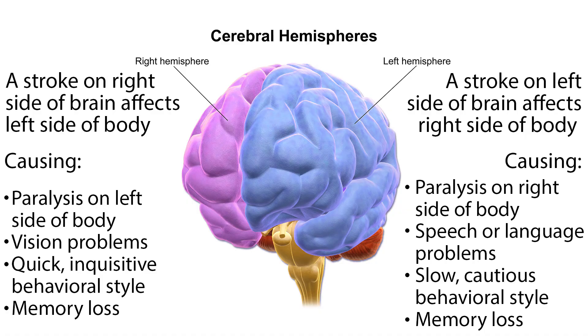Every stroke is unique, but the effects seen in patients are very similar. When a stroke occurs, blood flow cannot reach all areas of the brain. The effects of the stroke are dependent on the location of the obstruction and the extent of brain tissue affected. Since one side of the brain controls the opposite side of the body, a stroke occurring in the right side of the brain will result in neurological complications on the left side of the body, including paralysis on the left side, vision problems, quick inquisitive behavioral style, and memory loss. If a stroke occurs on the left side of the brain, the right side of the body will be affected, producing paralysis on the right side, speech or language problems, slow cautious behavioral style, and memory loss. If a stroke occurs in the brain stem, it may affect both sides of the body or leave the patient in a locked-in state, where the patient is generally unable to speak or achieve any movement below the neck.